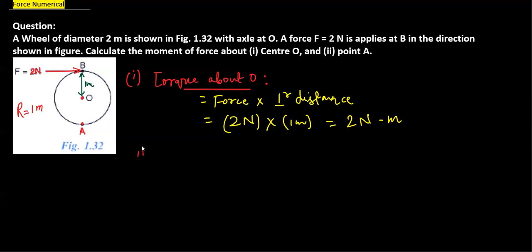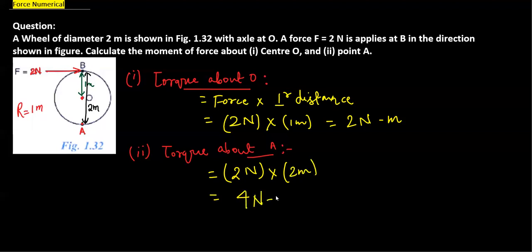Now for the second part, you have to take torque about point A. The formula is force into perpendicular distance. Force is 2 newton, and from point A the perpendicular distance is the diameter value, which is 2 meters, so you will get 4 newton meter.